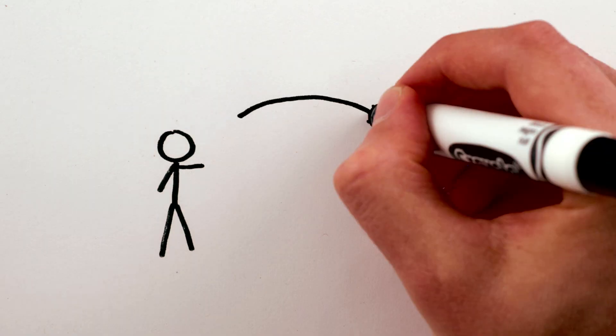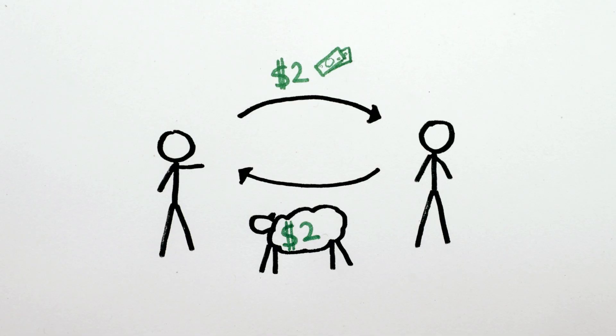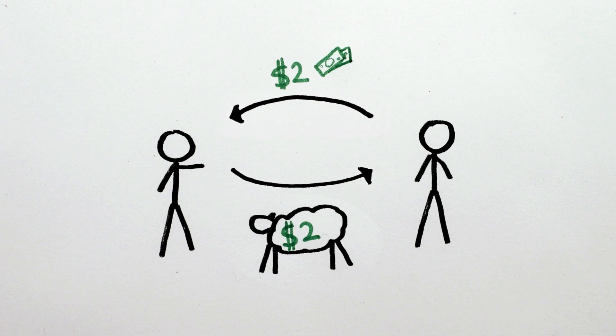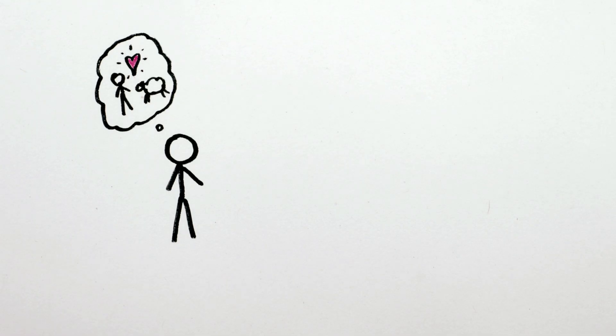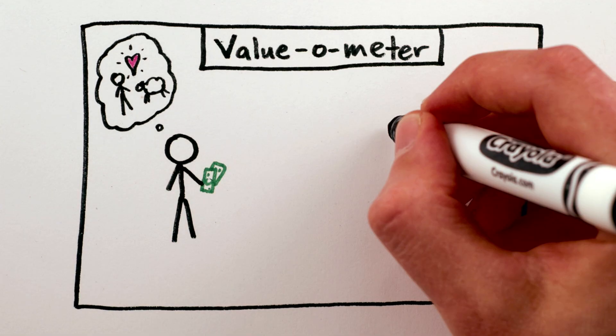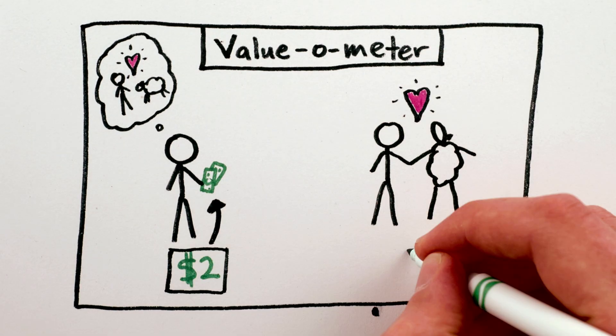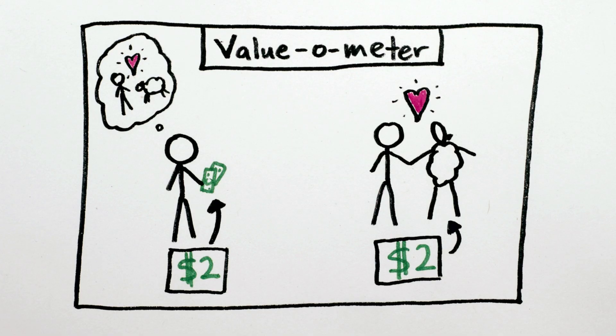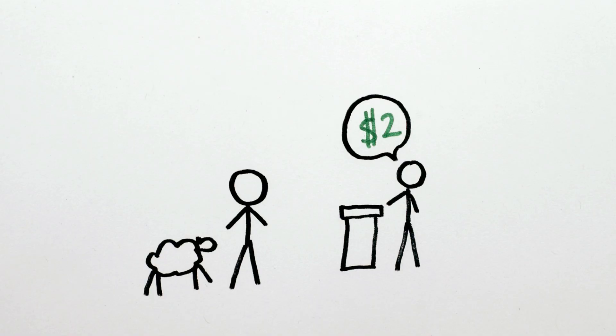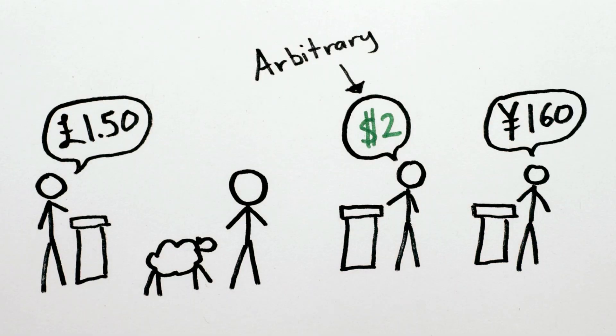Suppose for example that I gave you $2 for a $2 sheep. Nothing has really happened, or no value has been transferred, because I could sell you the sheep back and end up with my same $2 again. Ignoring the fact that I may like sheep more than money, the real value as measured by our value-o-meter, which we call money, is unchanged. What's more, the amount of money we pay for things is really an arbitrary scale.